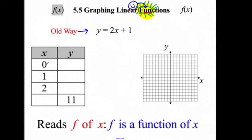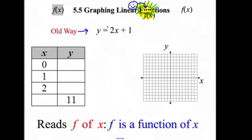With the old notation, we'd take our tables: when x is 0, what's y? When x is 1, what's y? When x is 2, what's y? Or if y is 11, what's x? That's how we were doing it. Now we're going to change up the notation a little bit. We're still graphing lines, still doing all that. Here's the change — are you ready? We're going to change the y to f of x.